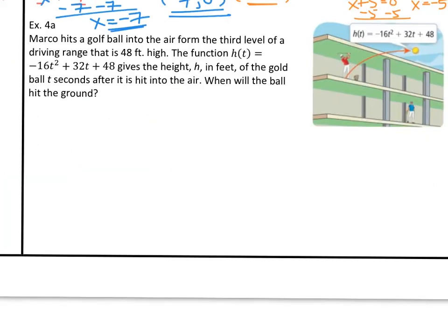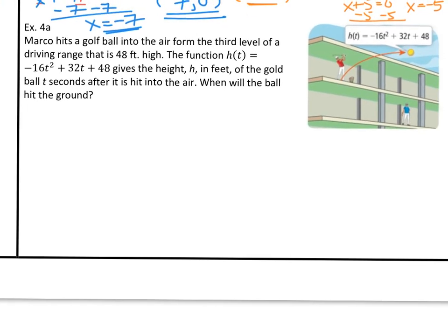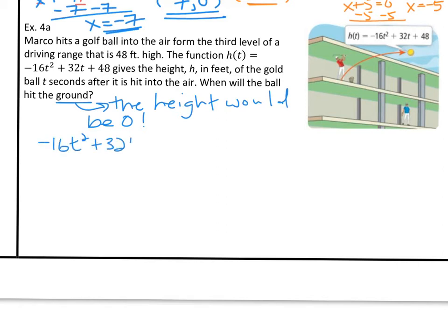Let's try some application. Marco hits a golf ball into the air from the third level of a driving range that is 48 feet high. The function h of t equals negative 16t squared plus 32t plus 48 gives the height in feet of the ball after t seconds. When will the ball hit the ground? If the ball is going to hit the ground, that means the height is zero, and that's what we set our equation equal to.